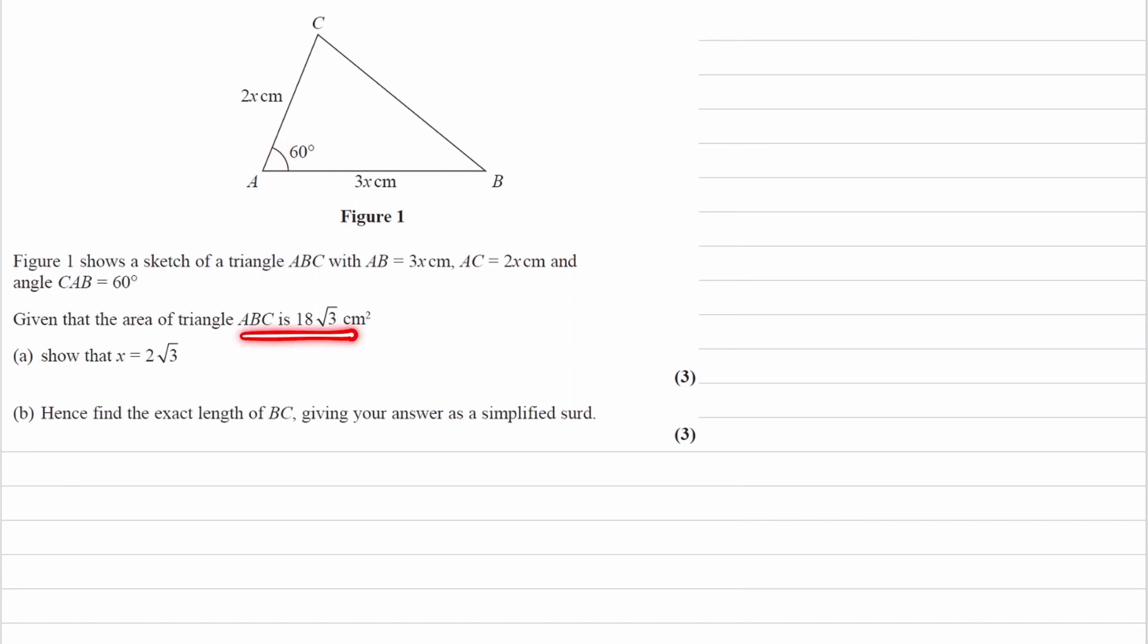We're told the area of the triangle, and then we're asked to work out that X, so the X that we have here and here, is equal to 2√3.